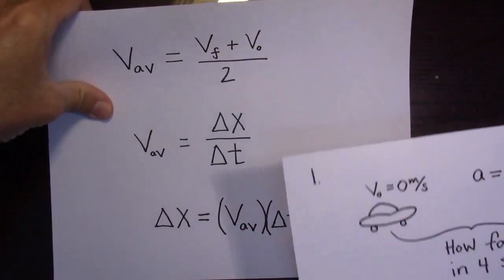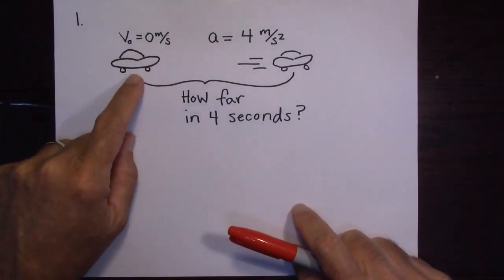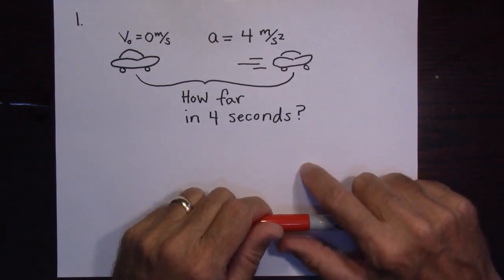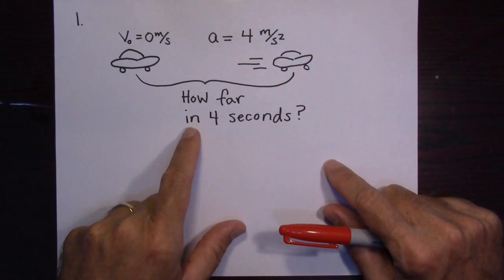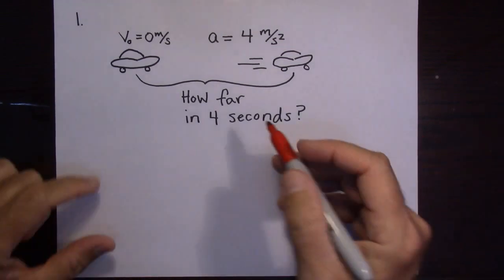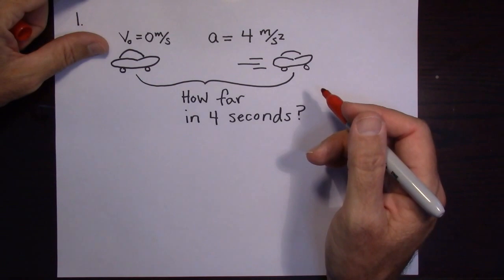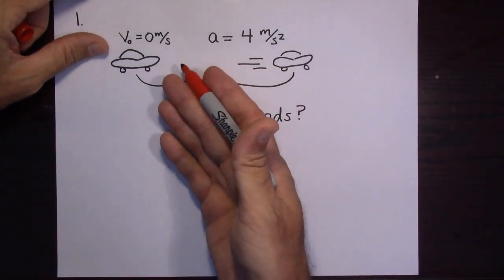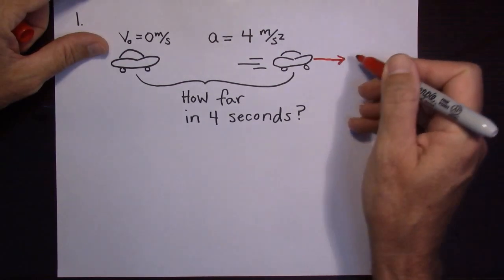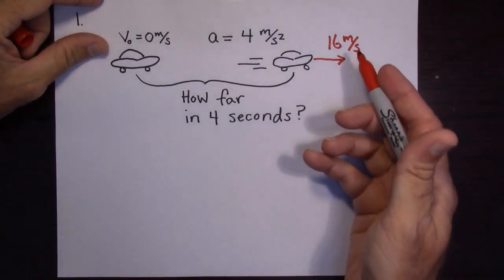A typical problem you could use this on: a car starts out at rest — 0 meters per second — with an acceleration of 4 meters per second squared. How far will the car go in 4 seconds? Since it's accelerating at 4 meters per second squared, every second it gains 4 meters per second of velocity. After 1 second it's going 4 m/s, after 2 it's going 8, after 3 it's going 12, and after 4 seconds it's going 16 meters per second.